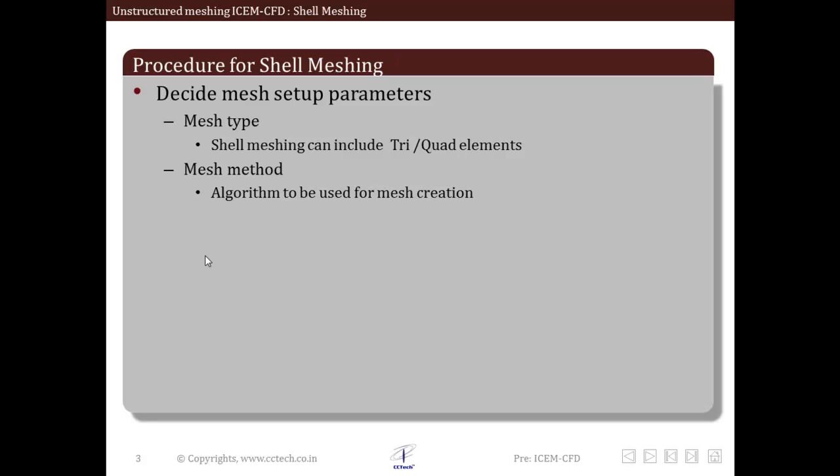There are certain algorithms for each type of mesh. In order to create that mesh, internally some algorithms run. We have an option to select these algorithms. Examples of such algorithms in ICEM CFD are patch dependent, patch independent, surface blocking, etc. So we decide which algorithm to use to generate the shell mesh.